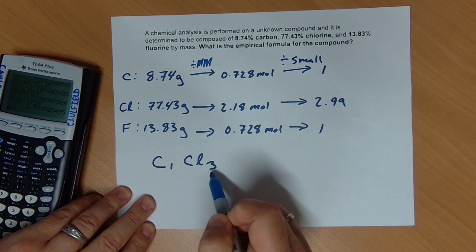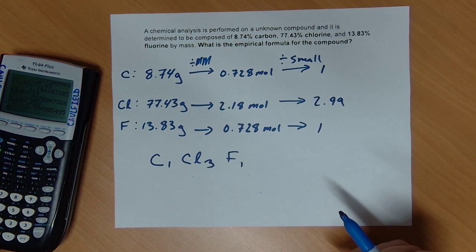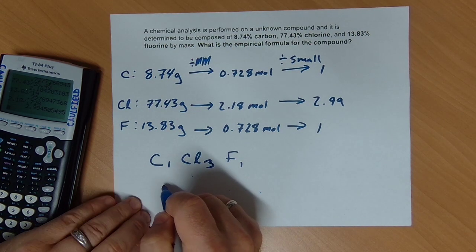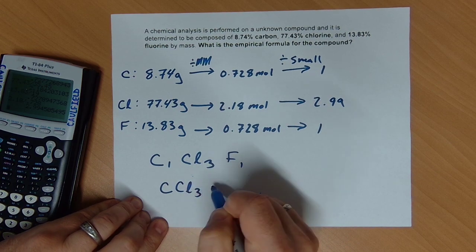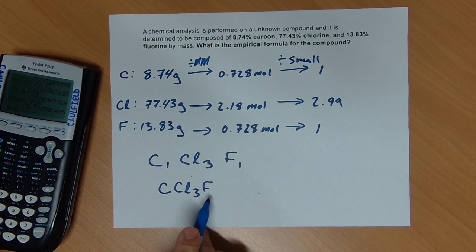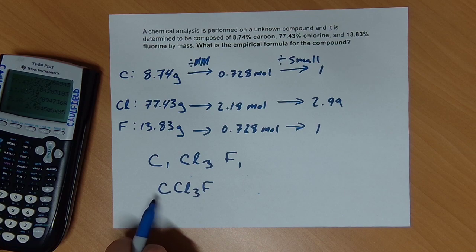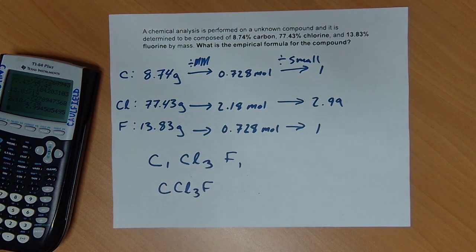This is going to be a three. And what I've discovered is C1Cl3, right? We're calling this a three, F1. This is effectively my empirical formula for this particular thing. Now a chemist would probably write this CCl3F. If we have a tendency where we put the most electronegative thing on the back, on the right-hand side, the least electronegative over here, that doesn't always hold true. But this is what I would write for my final empirical formula.